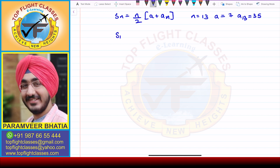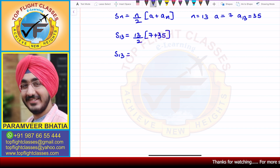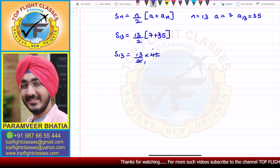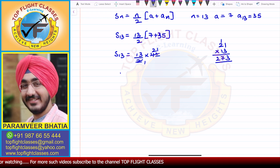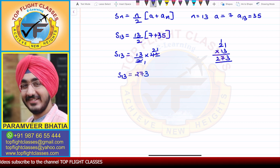So S13 will be equal to 13 by 2 times 7 plus 35. That gives S13 equal to 13 by 2 into 42. Cancelling 2 and 42 gives 21, so we have 21 into 13. 13 into 1 is 13, and 13 into 2 is 26, plus 1 is 27. So the sum of the first 13 terms comes out to be 273.